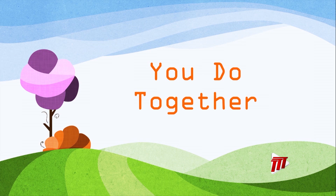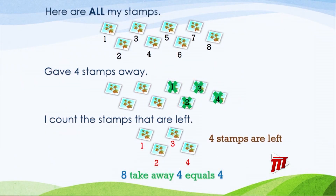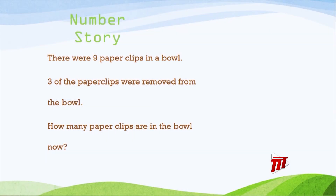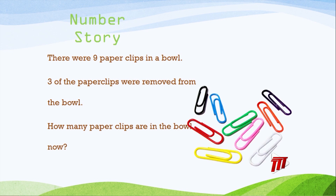Now boys and girls, I have my buddy Charlie right here with me. You are going to work with your buddy — your mommy, sister, brother, granny, uncle, auntie, whoever is there to help you. Let's get ready. I will read the number story: There were nine paperclips in a bowl. Three of the paperclips were removed from the bowl. How many paperclips are left in the bowl?